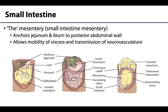The jejunum and ileum are very dominantly present within the abdominal cavity and are often referred to collectively in reference to the mesentery. The root of the mesentery attaches to the posterior abdominal wall, allowing branches from the retroperitoneal aorta to reach the intestine by traveling through the mesentery.